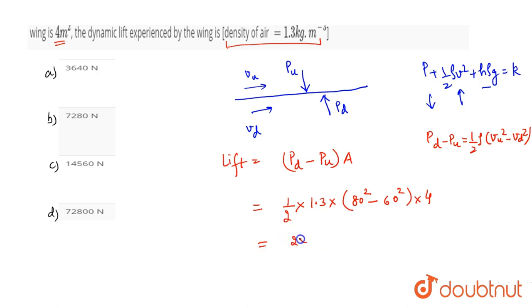So if we solve this we have 2 multiplied by 1.3 multiplied by 2800, this value is 7280 newton.